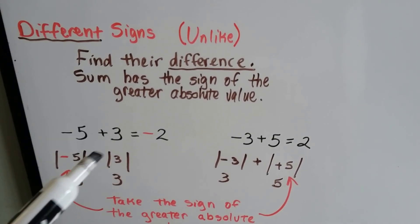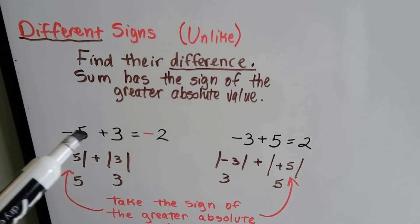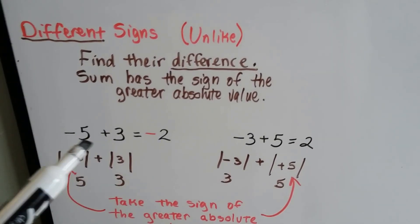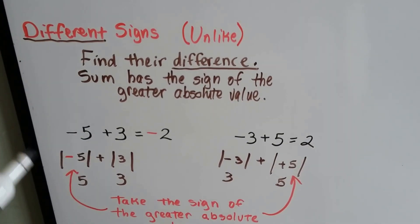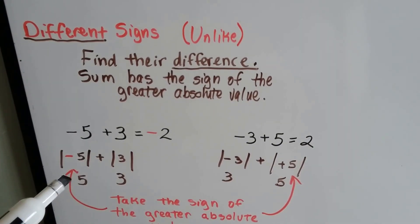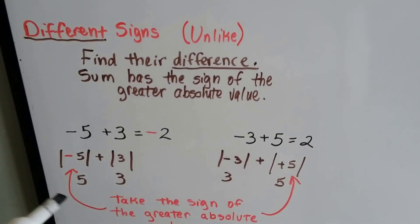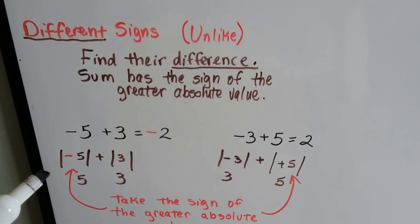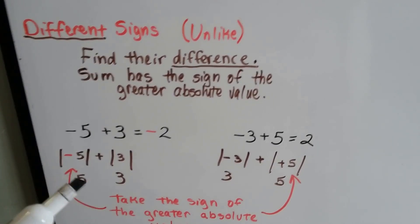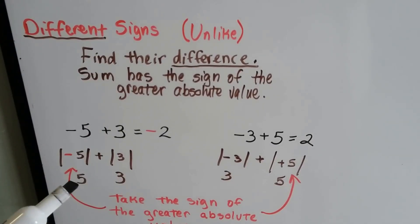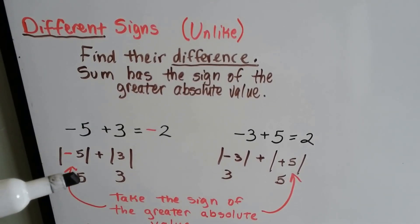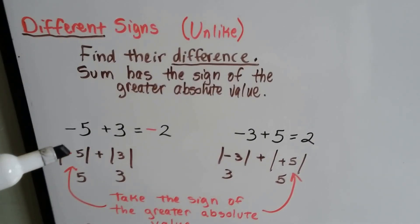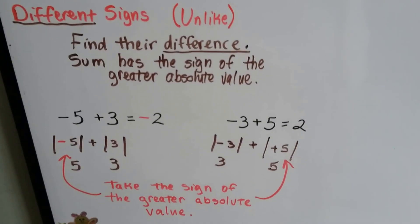We have a negative 5 and a positive 3. They have different signs. We're going to do the absolute value of 5 and 3 and find their difference. The difference between 5 and 3 is 2, and we take the sign of the larger absolute value — the 5 — and that's a negative. So we have a negative 2.